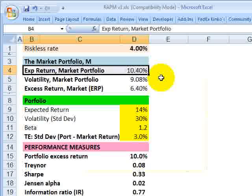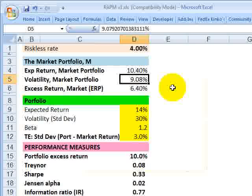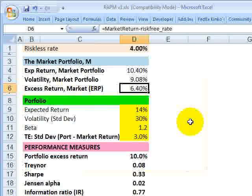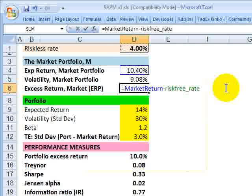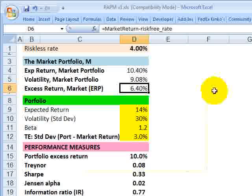I'm going to continue those assumptions and assume that our total market portfolio has an expected return of 10.4% with a volatility of just over 9%. Then I calculate the excess return because we use excess return a lot, but don't be thrown off, it's very simple. It's just the return over the riskless rate. So in this case, it's the market portfolio's expected return of 10.4% minus our riskless rate, giving an excess return of 6.4%.